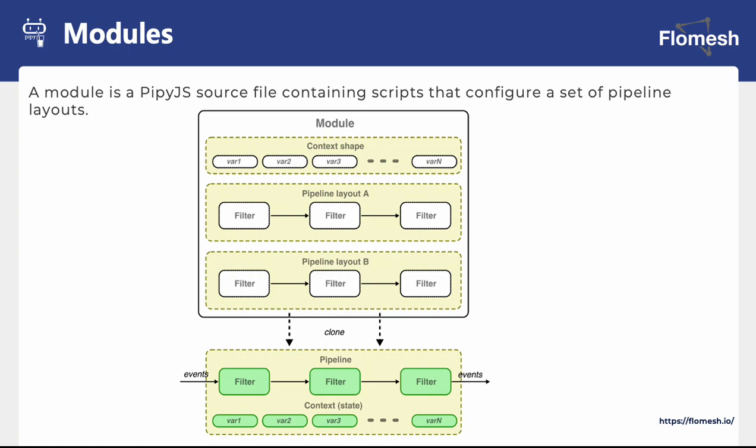A Pype module is a Pype.js source file containing the Pype script that configures a set of pipeline layouts. The pipeline layout is how you compose or chain the filters together, and each module has its own context. The context is where you define variables that can be used internally and are only visible within that module, but you can use the export and import functionality to export variables so that other modules can access them.